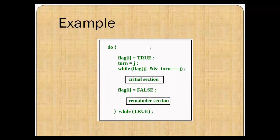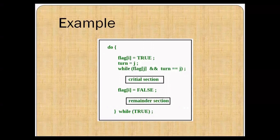Let's look at the code on the screen. Here, flag[i] = true means a process wants to enter the critical section, and turn = j means it is process J's turn. We have a while condition: if flag[j] is true and turn equals j, then both conditions being true allows process J to enter the critical section and access the shared data. Once the flag value becomes false, the process exits the critical section and moves to the remainder section.